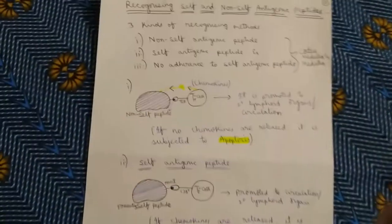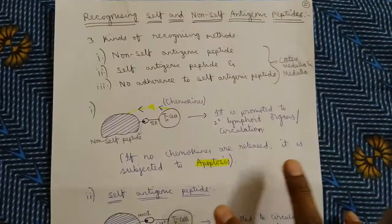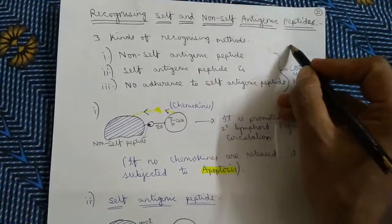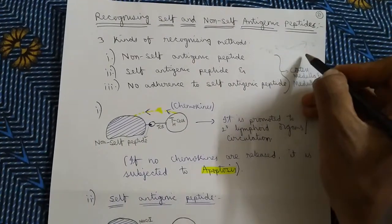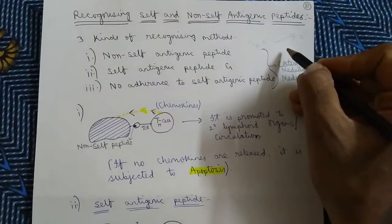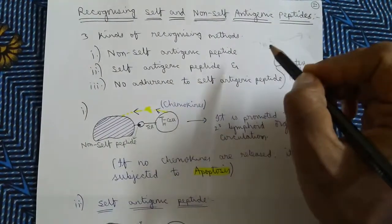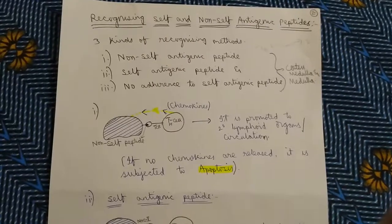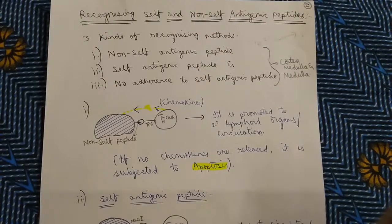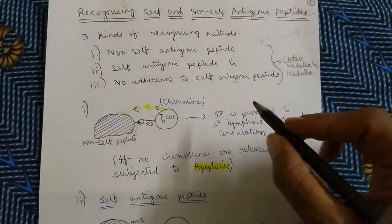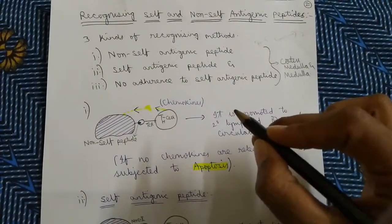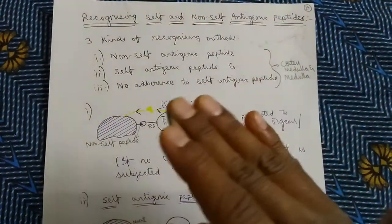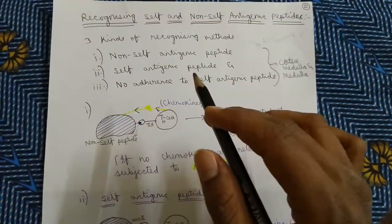Coming to the second step — TH and TC cells are produced. Now these TH and TC cells are sent to the secondary lymphoid organs, blood circulation system, or lymphatic systems to protect from harmful pathogens. The main theme of sending these cells to secondary lymphoid organs is identifying self and non-self. If they are good at identifying self and non-self, they are sent to the circulation system. If they fail, they are subjected to apoptosis. There are three selection methods.